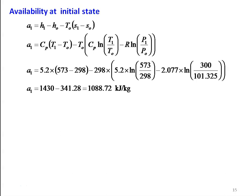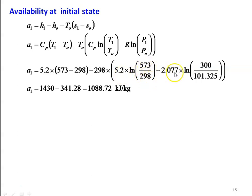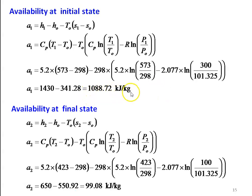Availability at initial state for steady flow process: A1 = H1 − H0 − T0(S1 − S0) = Cp(T1 − T0) − T0·[Cp·ln(T1/T0) − R·ln(P1/P0)]. Substituting: 5.2×(573−298) − 298×[5.2·ln(573/298) − 2.077·ln(300/101.325)] = 1430 − 341.28 = 1088.7 kJ/kg.